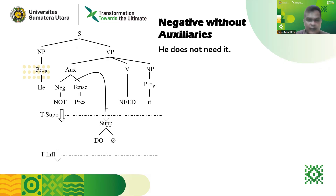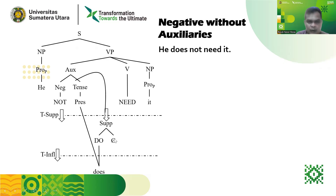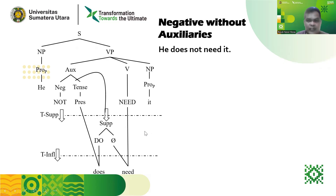Now let's do the inflectional transformation. As you can see, 'do' in its present form becomes 'does.' Why? Because the NP is the third-person singular 'he,' so we have to use 'does.' And then we have the verb in the form of infinitive — because supporting auxiliary must be followed by the infinitive form of a verb — so we still have 'need.' We have finished the inflectional transformation, but we haven't finished the negative transformation yet.